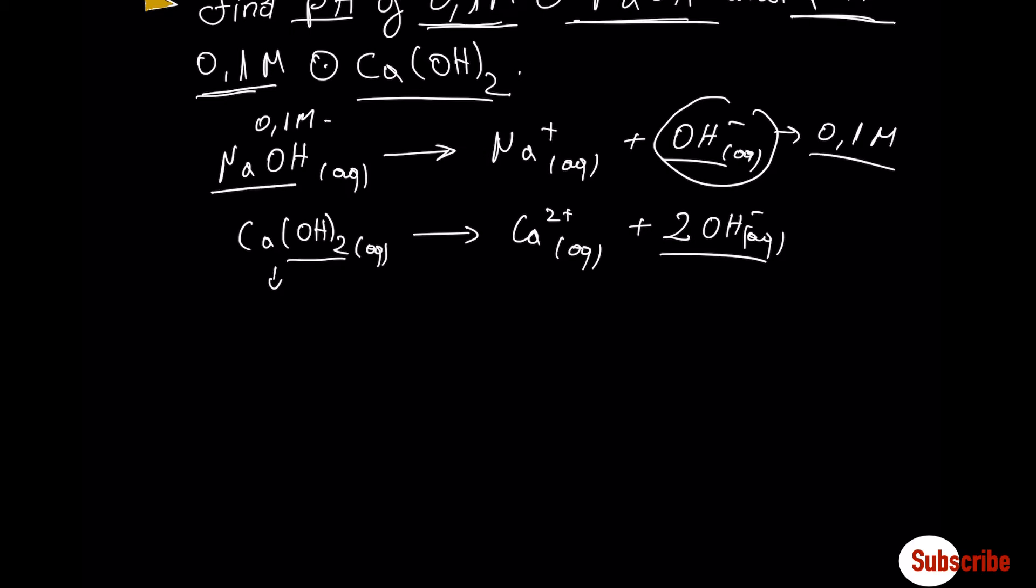But in the second case, again, the concentration of calcium hydroxide is 0.1 molar, but due to the stoichiometry, the concentration of OH- is 2 multiplied by 0.1 molar, which means it's 0.2 molar. You have to keep in mind these numbers because they are needed to find the pH.